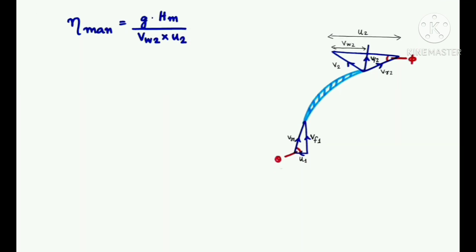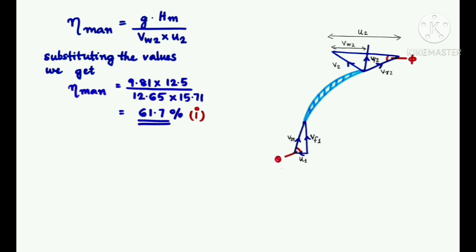The first part of the question is to find the manometric efficiency of the pump, which is given by the formula ηman = g×Hm/(Vw2×U2). Substituting the values we get ηman = 9.81 m/s² × 12.5 m / (12.65 m/s × 15.75 m/s). Thus, we get the value of manometric efficiency as 61.7%.